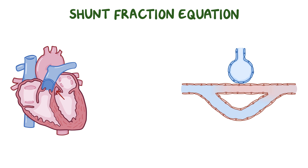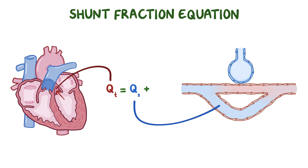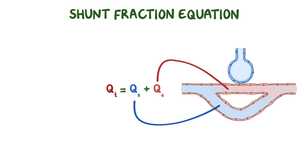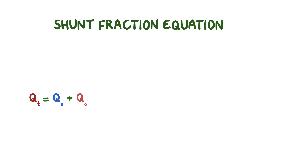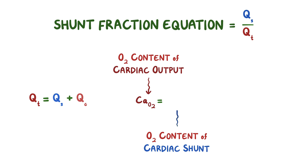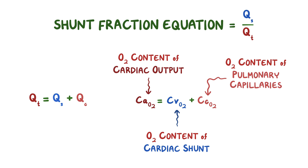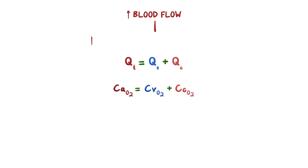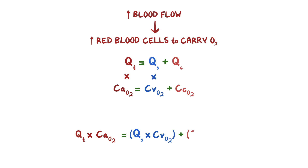Mathematically, if the total amount of blood flow, or cardiac output from the left ventricle, is QT, then it equals the amount that's shunted, or QS, plus the amount that goes through the pulmonary capillaries, or QC. Based on this, the shunt fraction is the proportion of blood flow through the shunt over the total blood flow. Similarly, the oxygen content in the cardiac output, which is the arterial blood, or CaO2, is equal to the oxygen content of the blood flowing through the shunt — and remember that it's venous blood that's diverted through the shunt, or CvO2 — plus the oxygen content of the blood flowing through the pulmonary capillaries, or CcO2. Now the more blood flow, the more red blood cells there are to carry oxygen, so oxygen content is affected by blood flow, and we can multiply QT by CaO2, QS by CvO2, and QC by CcO2.